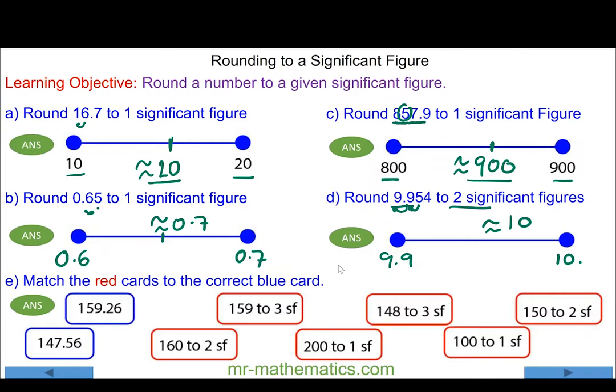For question a, we're going to match the red cards to the correct blue card. For 159.26 to one significant figure, the five does round up the one to a two, so to one significant figure it becomes approximately 200.